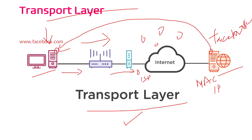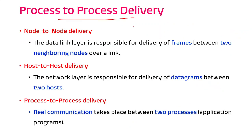I am going to open a particular application at my system, and from the server — the destination host — I am also going to open a particular process for the corresponding application. At both the source and the destination host, I open a process for the corresponding application so I can retrieve the specific intended data. There are three kinds of delivery: node-to-node delivery, host-to-host delivery, and process-to-process delivery. Node-to-node delivery — the data link layer is responsible — involves delivering frames between two neighboring or adjacent nodes over a link. Host-to-host delivery — the network layer is responsible — involves delivering data packets between two hosts.